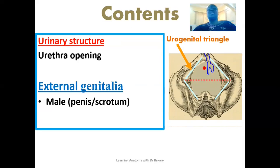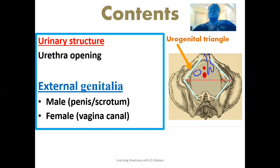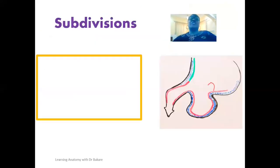We also have the scrotum finding its space around this region. In the female, we have the opening of the vaginal canal, highlighted here in red. In both the male and the female, different structures are located within the urogenital triangle, because of the peculiarity of the reproductive system in both sexes. For the urethra, we have this in both sexes — in both the male and the female, the urethra is located within the urogenital triangle.